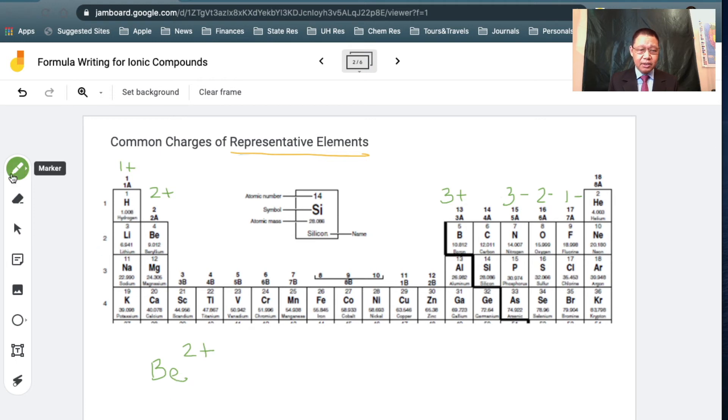Now, what you need to understand is that the charge consists of two things. The two is what you call the magnitude, while the plus here represents the sign. The magnitude represents the number of electrons that are involved, either given away or accepted. The sign represents whether it's going to be given away or accepted. A plus means given off, a minus means accepted.